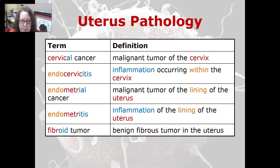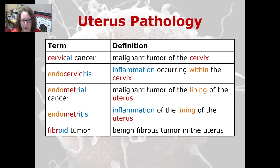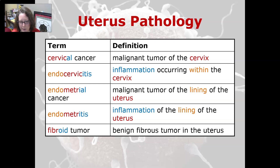Uterus pathology: cervical cancer is a malignant tumor of the cervix. Endocervicitis is an inflammation occurring within the cervix. Endometrial cancer is a malignant tumor of the lining of the uterus. Endometritis is an inflammation of the lining of the uterus. A fibroid tumor is a benign fibroid tumor in the uterus.